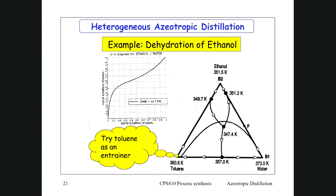This is a binary mixture of ethanol and water. If we look at using toluene as an entrainer: we use toluene because it is fairly non-polar, and therefore it is going to form a liquid-liquid equilibrium with water. We covered this in one of the opening lectures.